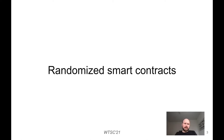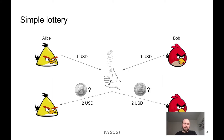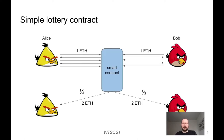What are randomized smart contracts and how are they different from other contracts in the context of verification? Consider a simple lottery in which two players bet $1 each, we toss a coin, and depending on the result the winner gets $2. This lottery can be implemented as a simple Ethereum Smart Contract where players pay 1 ETH and the contract automatically computes the winner and pays the reward.